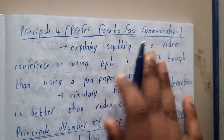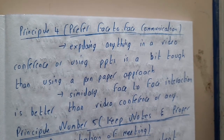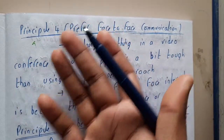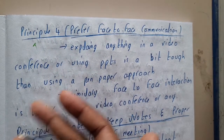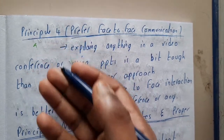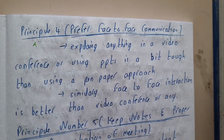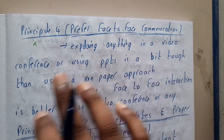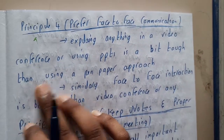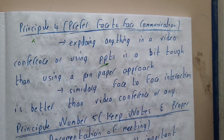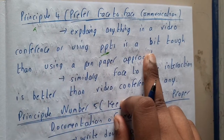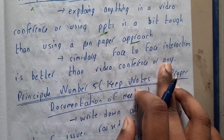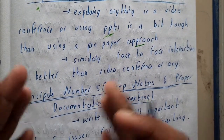Principle four is to prefer face-to-face communication. Nowadays we are shifting to online, but face-to-face communication is best because some members cannot express things in words alone. In face-to-face settings you can draw images, observe facial expressions, and understand things better. Explaining something via video conference or PPT is tougher than using a pen-and-paper approach. Face-to-face conversation is better than video conferences because everything can be discussed clearly.